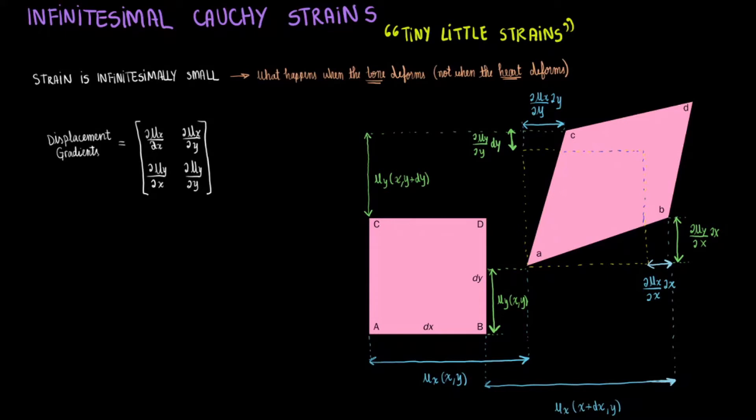dux divided by dx times dx, and dux divided by dy times dy, which are both basically dux, will shift the square to the side along the x-axis at different points.